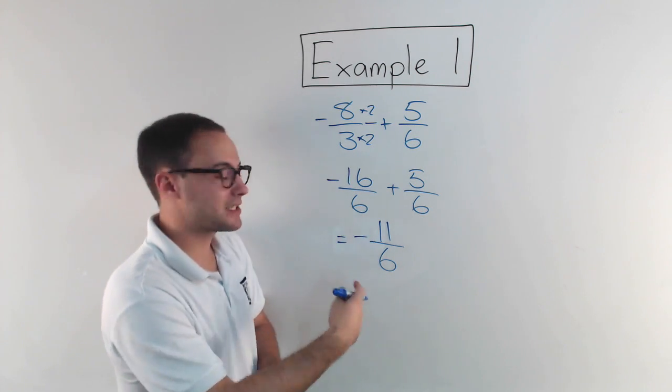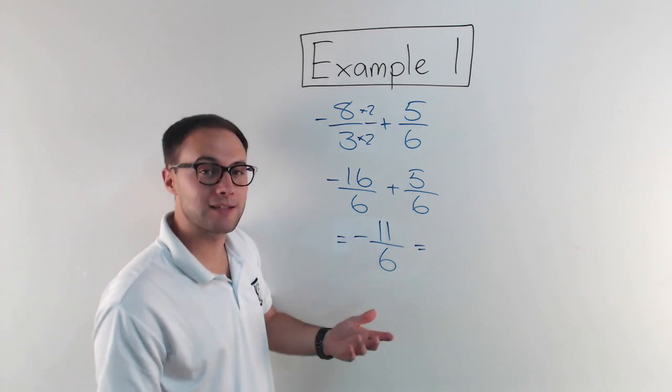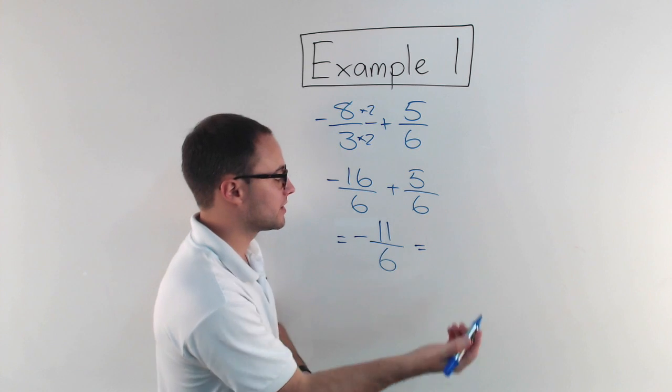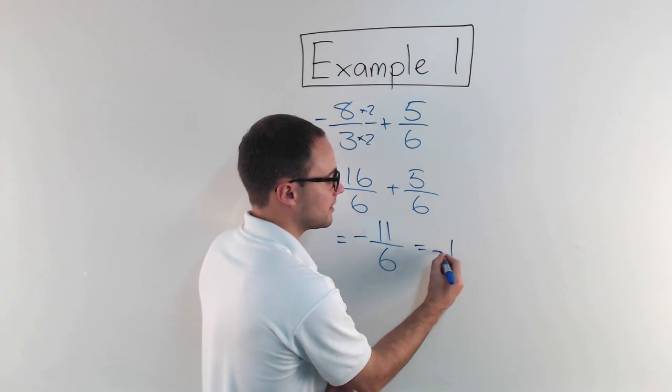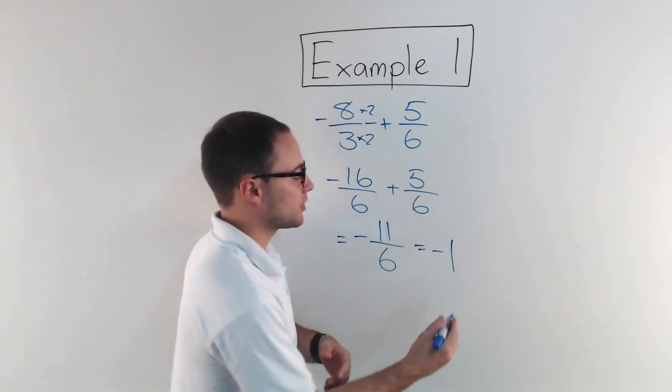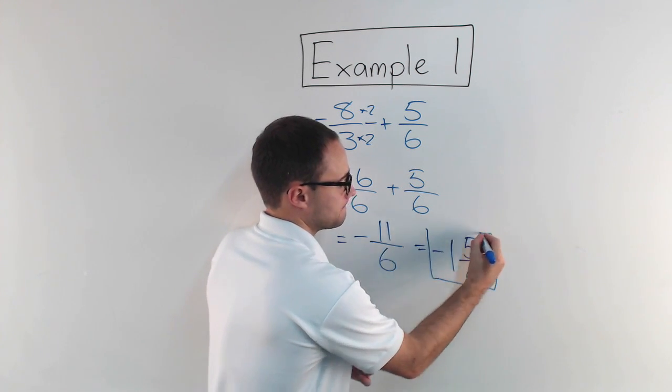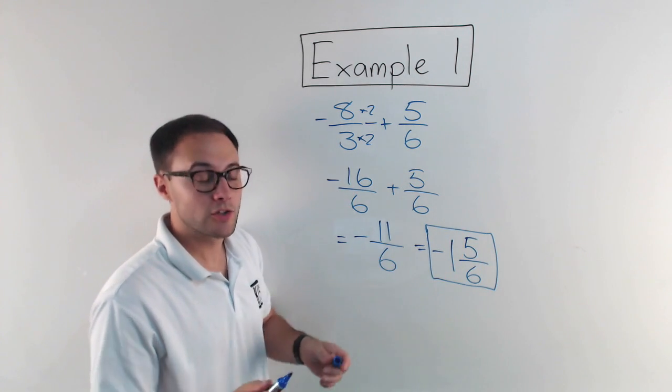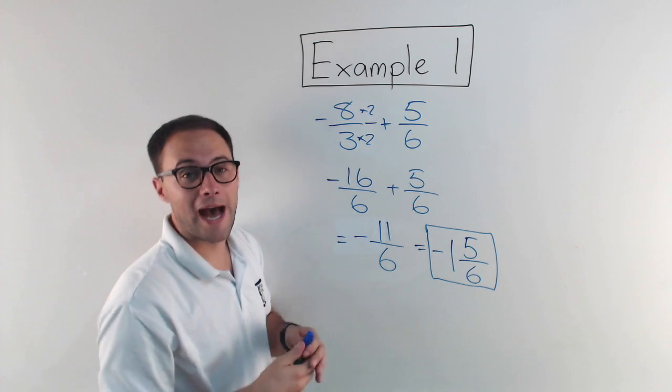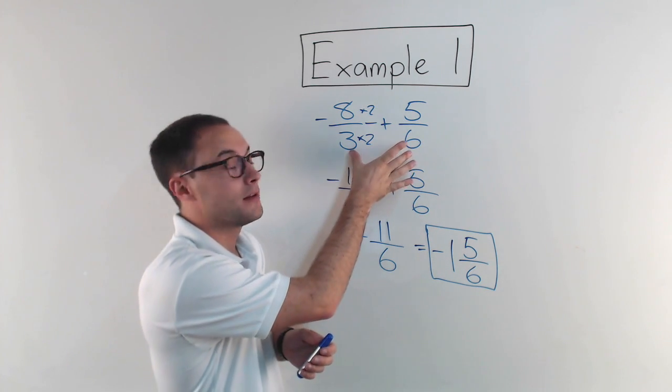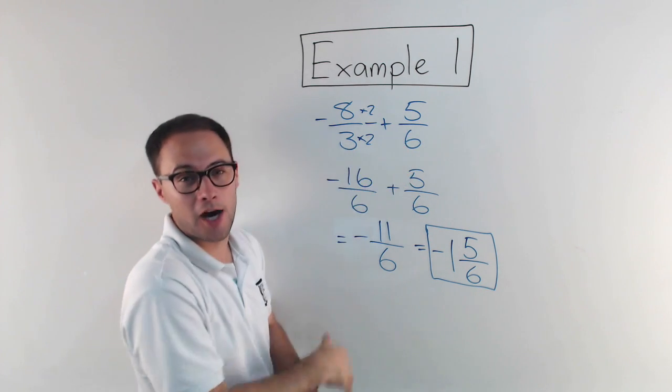That's an improper fraction, so I'm going to convert it to a mixed number. Six goes into eleven once. I have five left over, so negative one and five-sixths. So remember, when you're adding or subtracting with fractions, you've got to have a common denominator. Let's try another example.